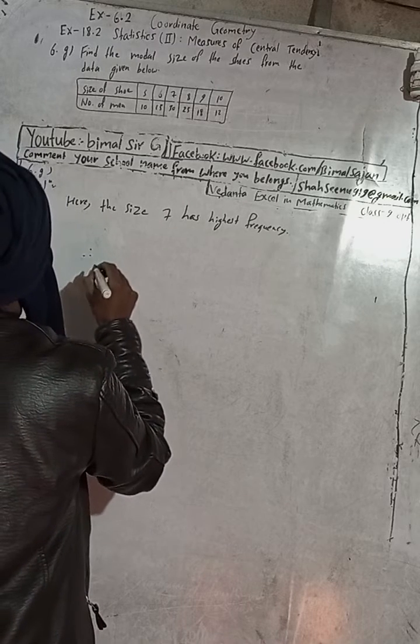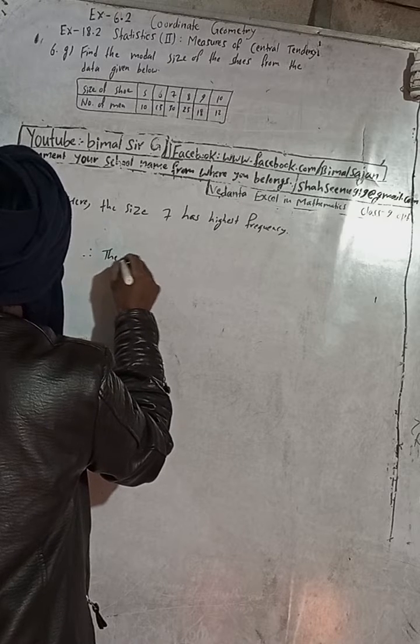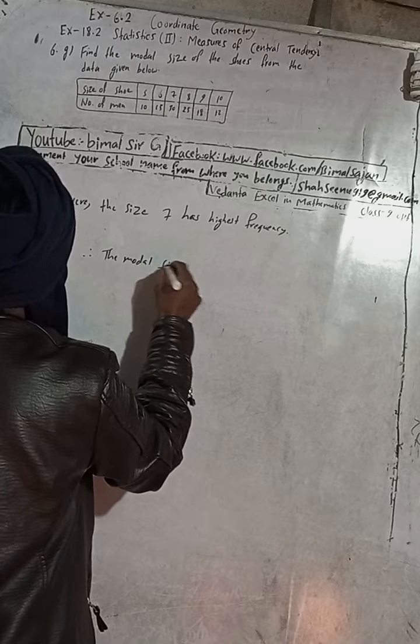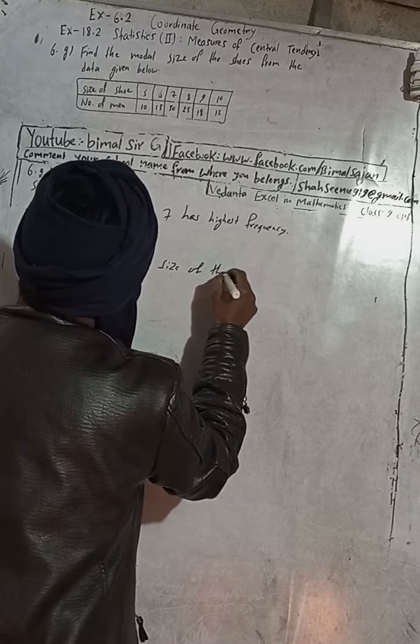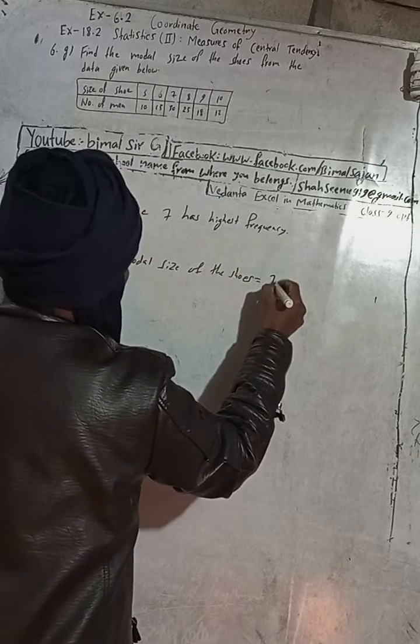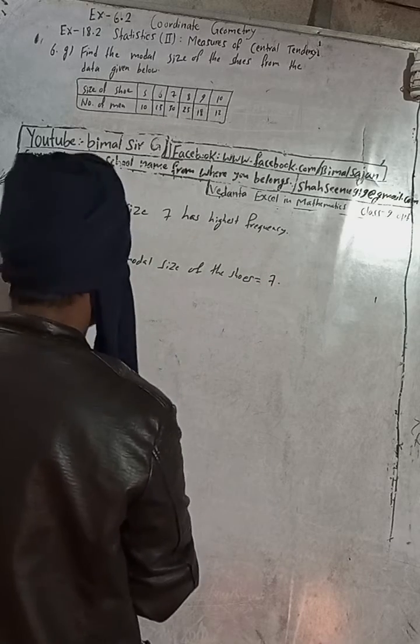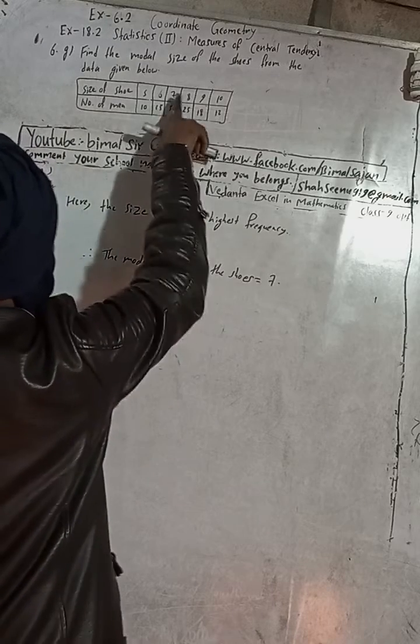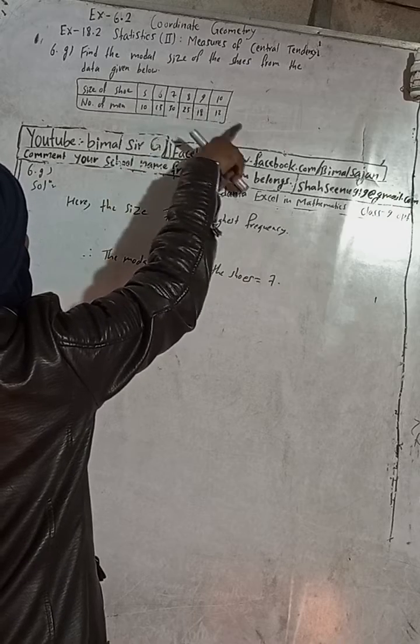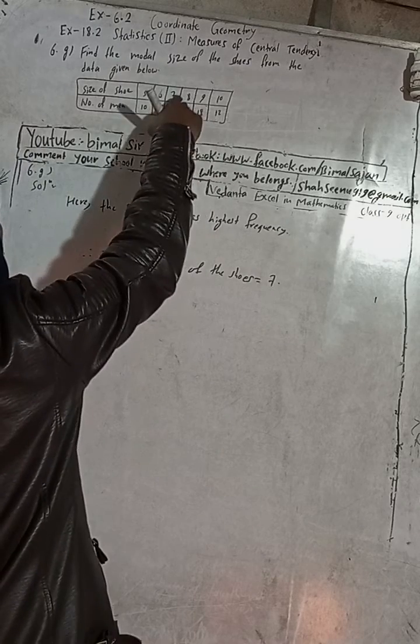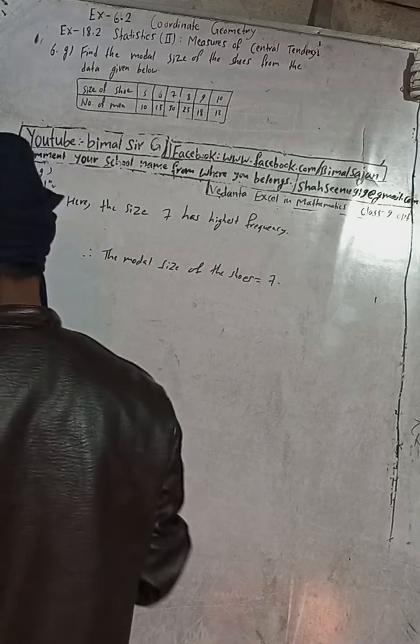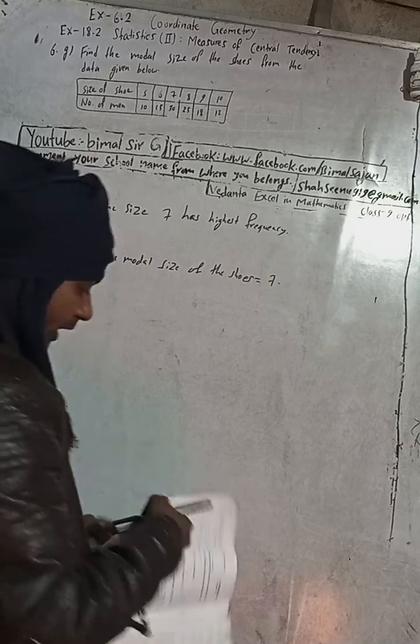Therefore, the modal size of the shoe is equal to what? Modal size is equal to 7. Okay, why? Because 7 has the highest frequency, which is 30. And others have 18, 25, etc. These are all less, but this is the highest frequency. That's why we have to take this. So the data which has the highest frequency, that is called the modal size. In the book, the answer is here: 7.